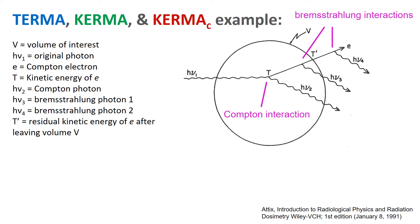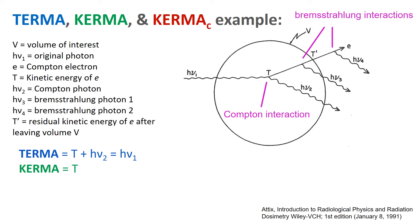From this series of interactions, we can define TERMA, KERMA, collision KERMA, and radiative KERMA. TERMA, the total energy released per unit mass, includes the kinetic energy given to the electron plus the energy of the Compton photon that is removed from the beam in narrow beam geometry. So TERMA equals T plus hν₂, which equals hν₁.